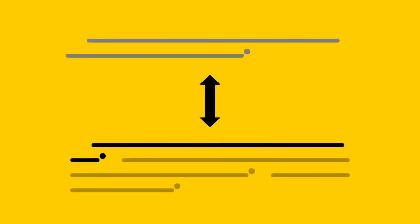No matter which approach you take, be sure to proofread your topic sentences at the end. I try to ask myself: Do my topic sentences introduce everything I talk about in my body paragraph and nothing extra? Do they show the connection between the idea in the paragraph and the main thesis idea? Do they serve as a bridge between the previous paragraph and the current paragraph? If someone were to read only my topic sentences, would they be able to get the main ideas of my paper? Does my argument become clearer and more effective with each topic sentence?